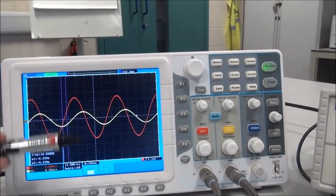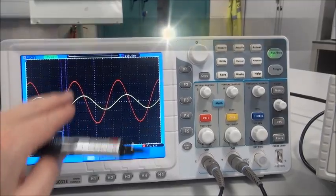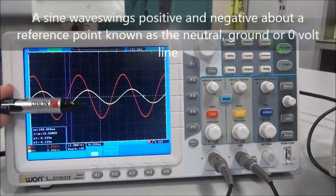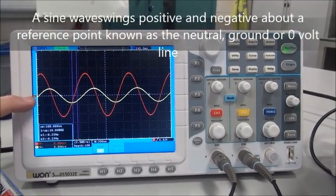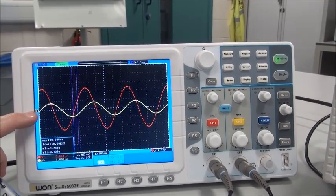Now amplitude is the maximum shift in the positive direction here, this one here. So that's where the signal starts, that's what we call the neutral line, zero volt line.